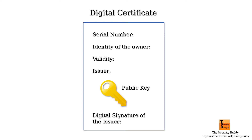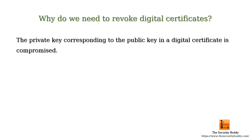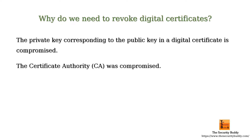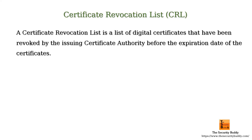The digital certificate expires after the expiration date, but if the private key corresponding to the public key in a digital certificate is compromised, or the certificate authority was compromised, the owner of the digital certificate needs to revoke it so that attackers cannot exploit the secret keys anymore. A certificate revocation list is a list of digital certificates that have been revoked by the issuing certificate authority before their expiration date.